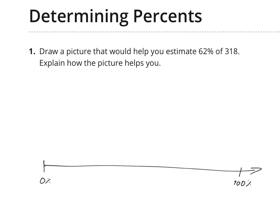And what I'm going to do is look for a landmark friendly number because I'm estimating. It doesn't have to be exact. So for 318 I'm going to turn it into 300. So 100% would be there. Now, we need to get to 62%. Well, I know that half is 50%.